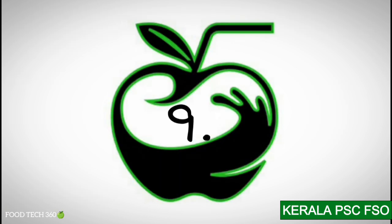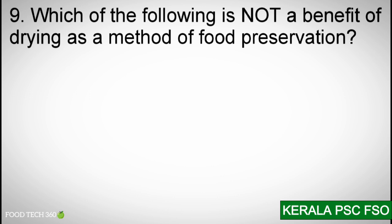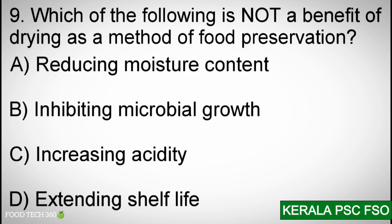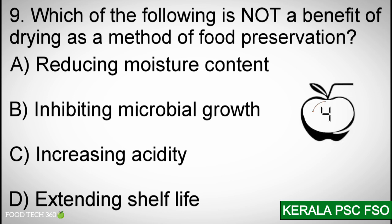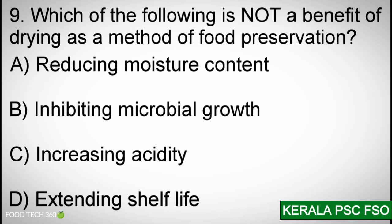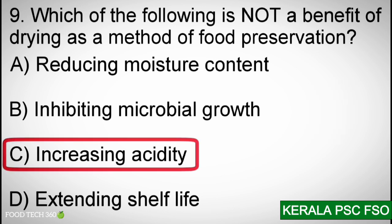Question number 9: Which of the following is not a benefit of drying as a method of food preservation? A. Reducing moisture content, B. Inhibiting microbial growth, C. Increasing acidity, D. Extending shelf life. Correct answer: C. Increasing acidity.